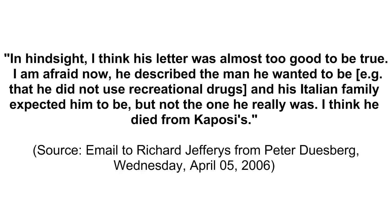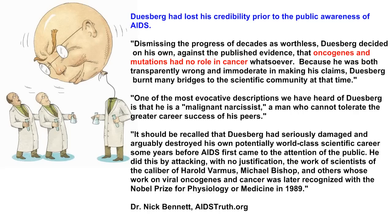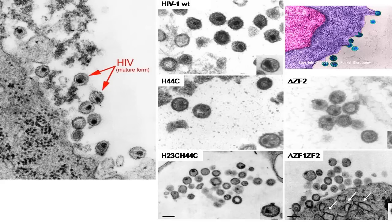What was Duisberg's response? Did he retract his statement? No — he used an ad hoc argument. Here's a quote from a published email he wrote to a colleague: 'In hindsight, I think his letter was almost too good to be true. I am afraid now he described the man he wanted to be — that he did not use recreational drugs — and his Italian family expected him to be, but not the one he really was. I think he died from Kaposi's.' This is such an obvious reversal of position, we begin to see how deeply confirmation bias affects Peter Duisberg's views. This was a missed opportunity to falsify his position that only people who took drugs or antivirals developed AIDS. Instead, he discounted this evidence with an ad hoc hypothesis, thus ensuring that he never conceded his failure. He has done the same for those who were infected by transfusion, hemophiliacs, newborns, healthcare workers, and married heterosexual transmission. These types of rationalizations show that he no longer understands the basic practice of science.